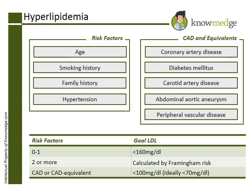Choice E, hypertension in an obese patient does not necessarily require a goal LDL of less than 100. In this patient, we would have to calculate a Framingham risk score to determine his specific goal LDL.